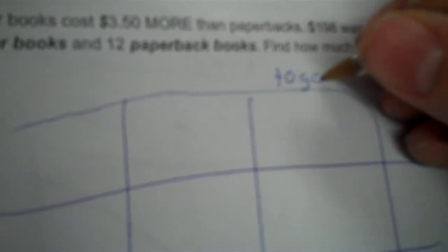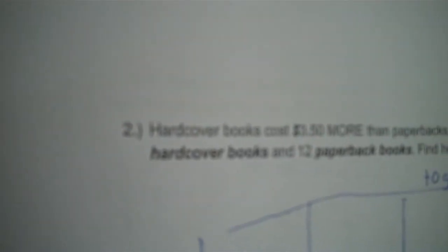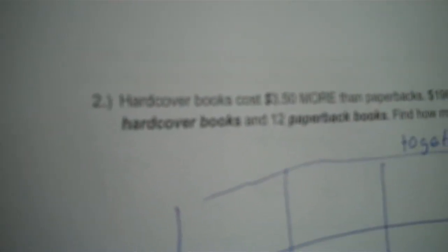So, why don't we just subtract 700 minus 489 and get 211. I mean, you can plug it in if you want, but you're kind of wasting time. Number two. Hardcover books cost $3.50 more than paperbacks. $198 was collected from selling 20 hardcover books and 12 paperback books.